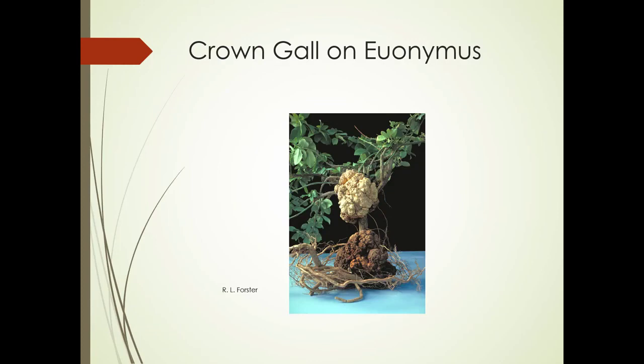Here it is on euonymus — also fortunei — so be on the lookout there. There are some on campus; if you're on campus at any point, check it out. You can see the upper gall here is white, so it's a young gall, but below we've got an older gall. This plant's a goner.